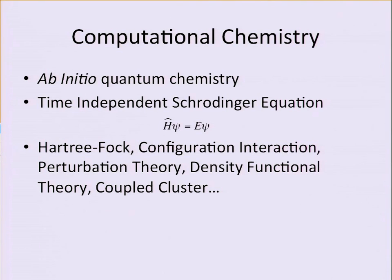Hartree-Fock is not very accurate, so we add other methods: configuration interaction, full CI, perturbation theory, Møller-Plesset or second-order perturbation theory (MP2), DFT — which is ubiquitous in actual computations — and coupled cluster. These form a hierarchy of methods, and they've been very successful over the last 80 years. For small molecules in a ground state with no metals or radicals, we can solve energies, geometries, and chemical properties very accurately — I consider that a largely solved problem.